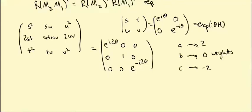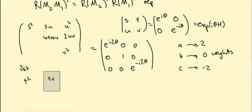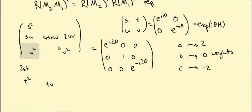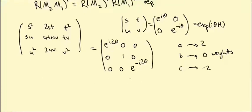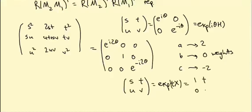We should remember to transpose this matrix. For the diagonal case it doesn't matter yet, but it will matter now. What happens when we take s, t, u, v to be exp(tX), which is the matrix 1, t, 0, 1?